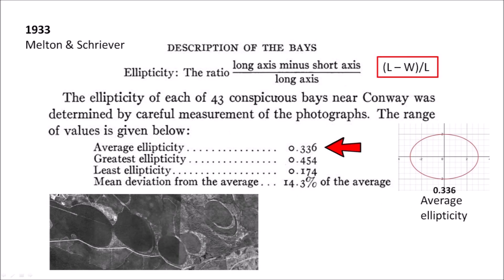However, Melton and Schreiber calculated the ellipticity of 43 well-defined Carolina Bays near Conway, South Carolina by carefully measuring aerial photographs. They found that the average ellipticity was 0.336 and that the mean deviation from the average was 14.3%. These size constraints were very peculiar for geological features.